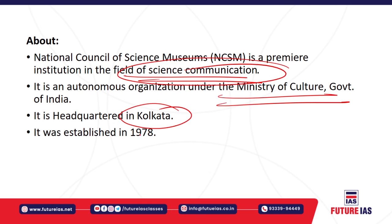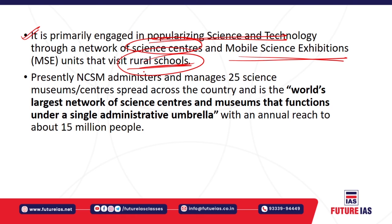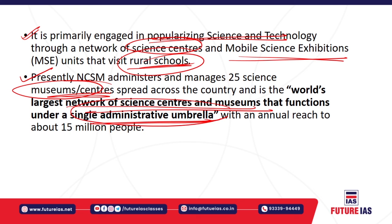The NCSM is headquartered in Kolkata and was established in 1978. Its primary task is to popularize science and technology through a network of science centers, museums, and mobile science exhibitions across different places — including visits to rural schools. Presently, NCSM administers and manages 25 science museums and centers across the country, currently holding the world's largest network of science centers and museums under a single administrative umbrella, with an annual reach of around 15 million people.